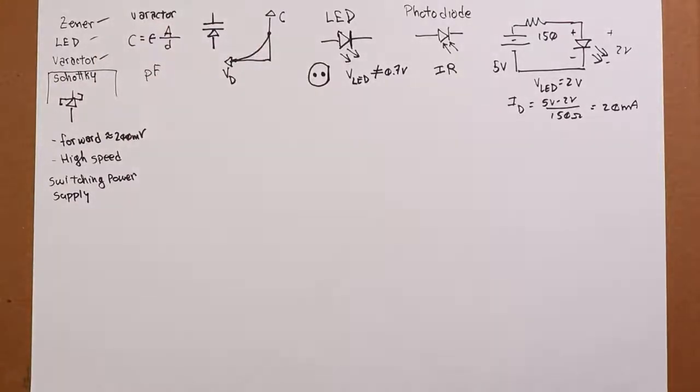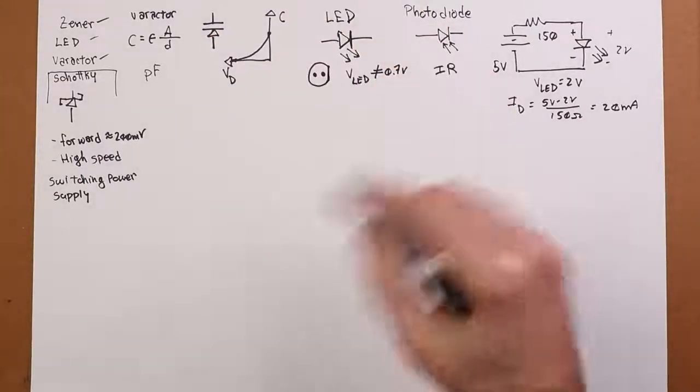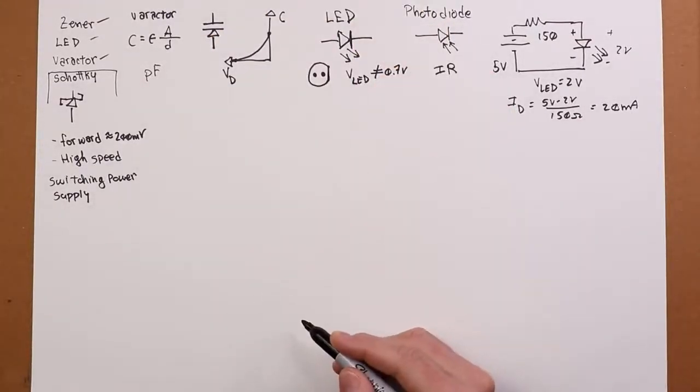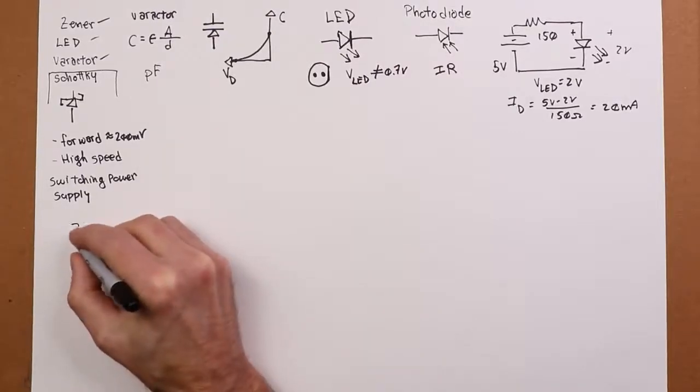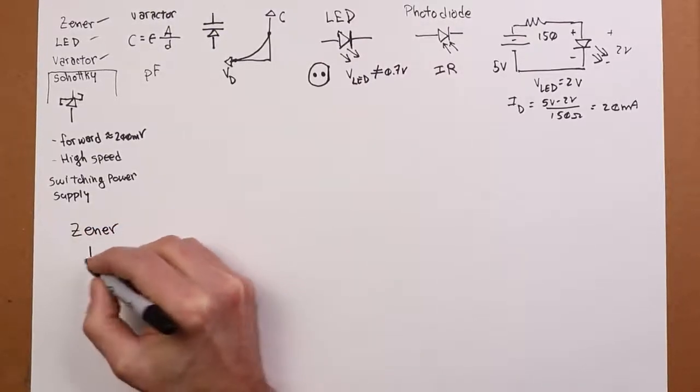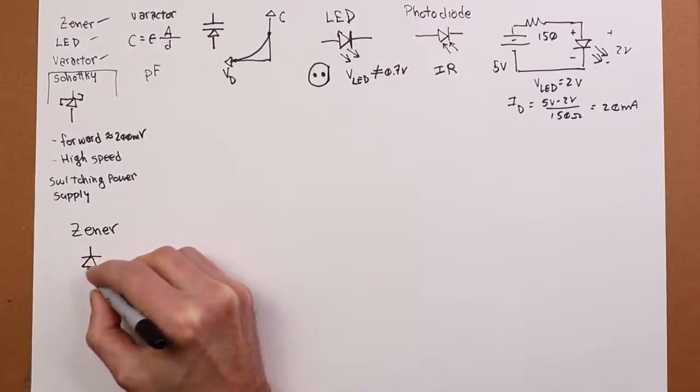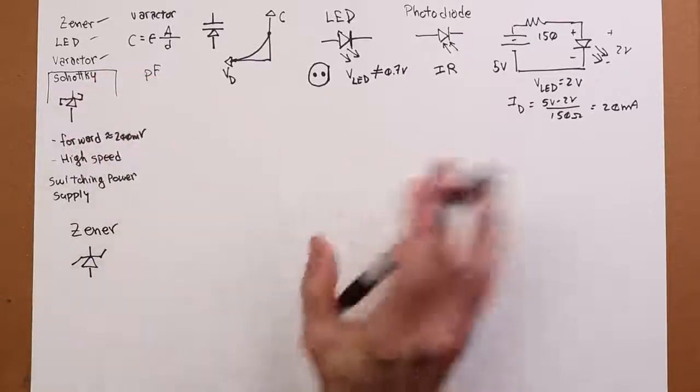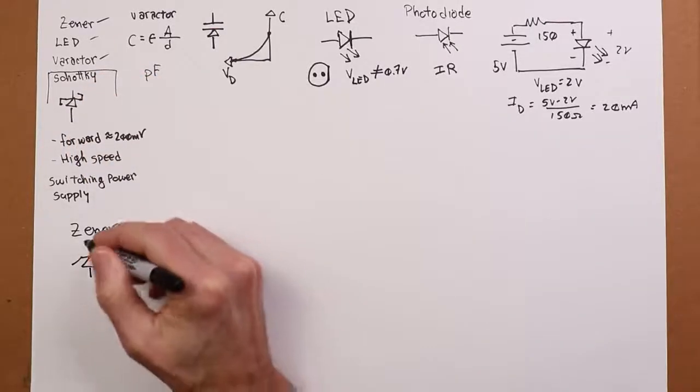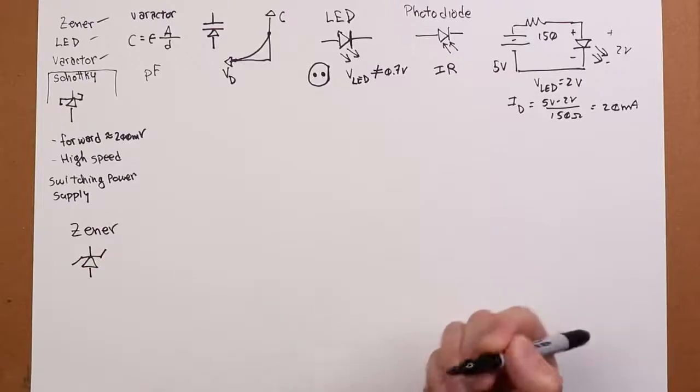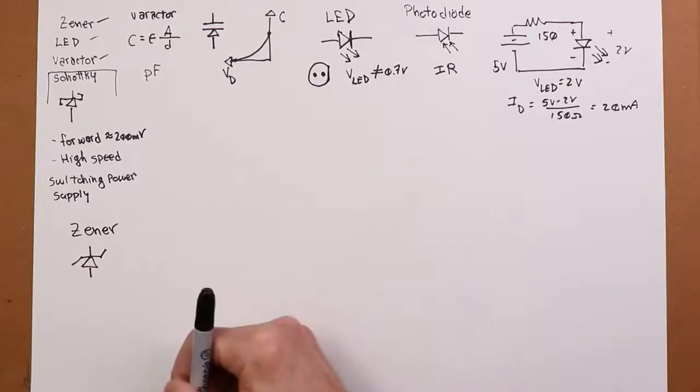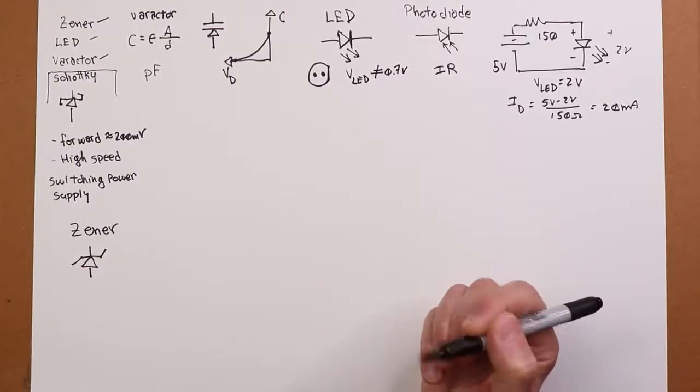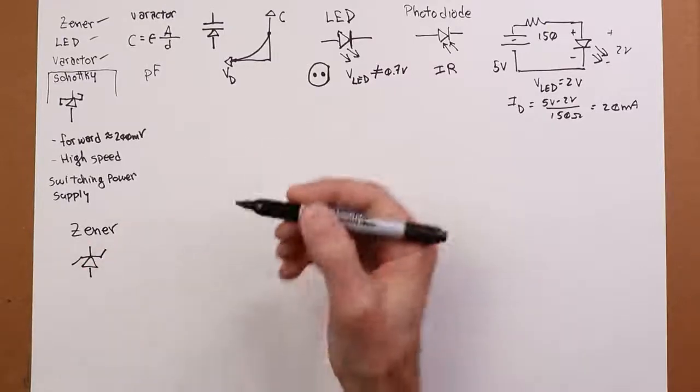Zener. So the Zener, interesting little device. Like the Varactor, we actually use this thing in reverse bias. The symbol for our Zener is also a very happy symbol. He's kind of waving. Not full jazz hands, but he's waving. So we use this in reverse bias. You can imagine it's kind of like purposely putting this thing into breakdown in a way. If you use Zener in forward bias, it works like a regular diode.